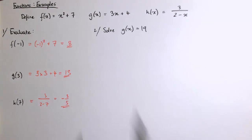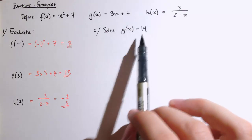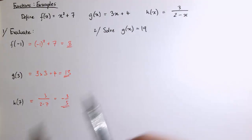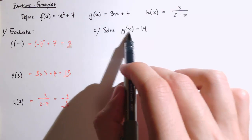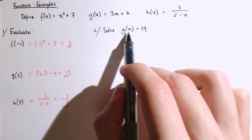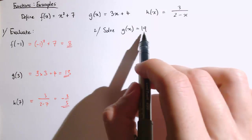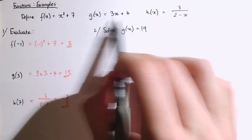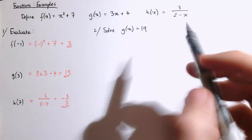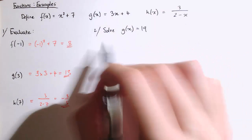So the next question says solve g of x equals 19. So what this means is, what value of x do we take so that g of x is equal to 19? What input x can we put into this function to get an output of 19?